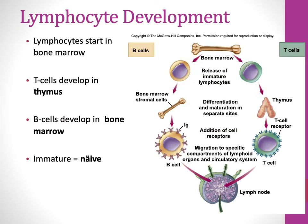This is another figure and representation of lymphocyte development. For T cells, development happens in the thymus; for B cells, in the bone marrow. All lymphocytes start in the bone marrow though, because that is where the hematopoietic stem cell is present.